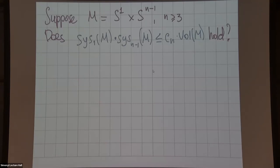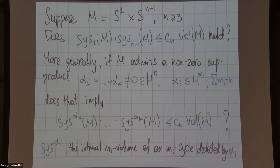Is it true that the first homology systole multiplied by the co-dimension one homology systole still can be bounded by the volume? Or more generally, if you have some non-trivial cup product for some homology classes, not necessarily first homology, does that imply that the corresponding product of the higher dimensional systoles is still bounded by the volume?